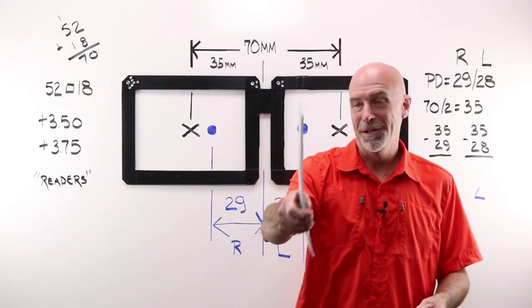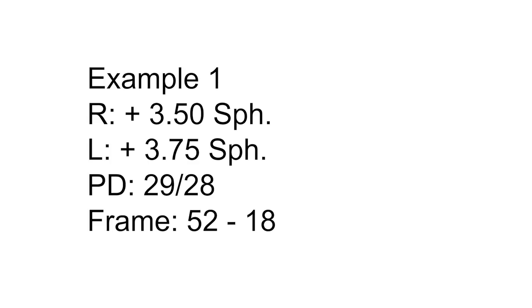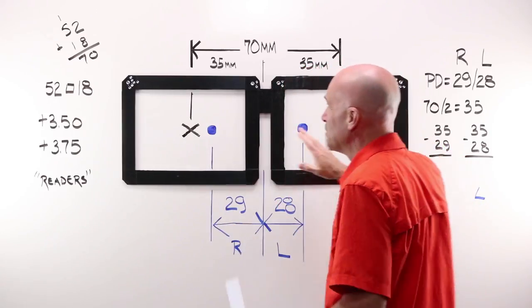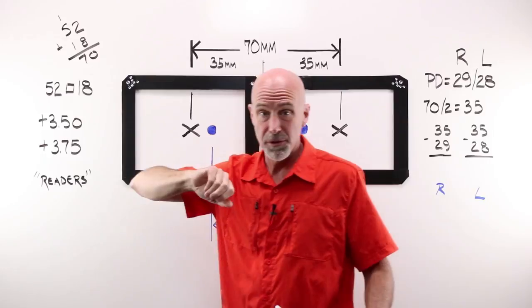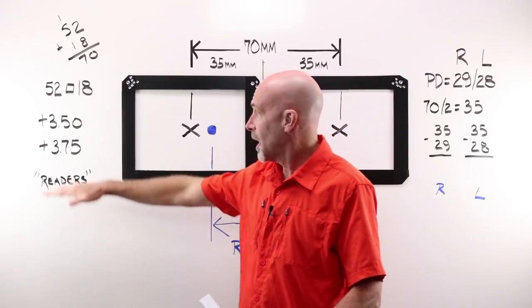Example number one. For this example, we'll have a right of plus 3.50, a left of plus 3.75, customer PD of 29/28, and a frame of 52-18. That would be a common PD and powers for a single vision reader. We have SuperFrame, and SuperFrame says it has a boxing system of 52-18.